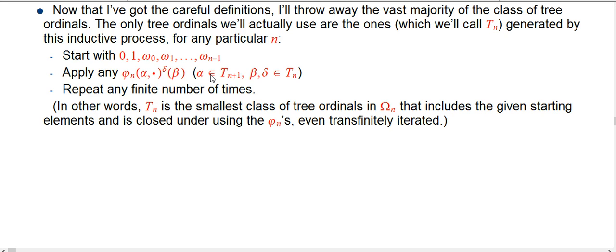The alpha has to be generated in this way as well. Applied to beta, which has to be in T_n. And then iterated, if necessary, delta times, and that also has to be in T_n. So we're building this out very much like the omegas built out, but it's much more special — we only allow ourselves omegas as ingredients, and 0 and 1, and then the phi functions are our one and only way of creating new things. We can repeat that any finite number of times.